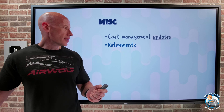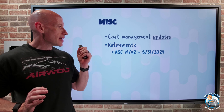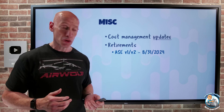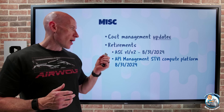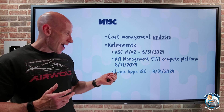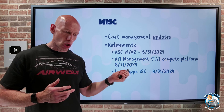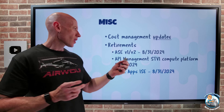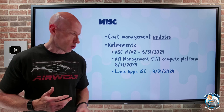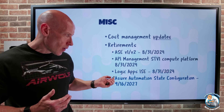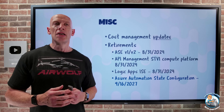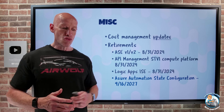There are a bunch of retirements. App Service Environment V1 and V2 expire end of August, so hopefully you're on V3 by now. API Management STV1 compute platform retires, as does the Logic Apps Integration Service Environment — all of those worked on the older cloud service that also retires end of August. And a new one: Azure Automation State Configuration retires on the 16th of September 2027, so you probably don't have to rush on that one.